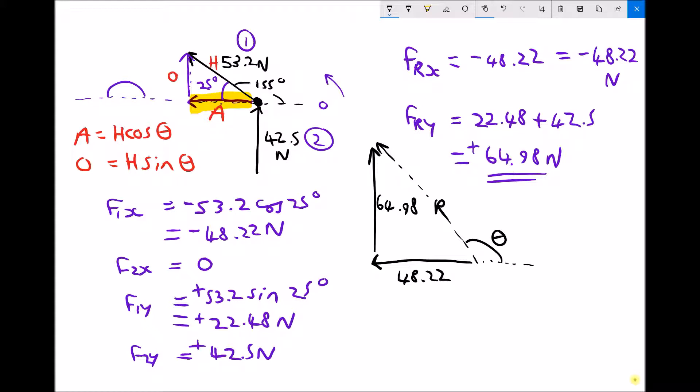Now the way that we'll need to do this is we'll need to find the angle inside the triangle, phi, and then we can determine theta from there. So first of all, we need to find the magnitude of the resultant. And remember, it's the square root of the 48.22 squared plus the 64.98 squared. The square of the two shorter sides gives the square of the longer side. 64.98 squared plus 48.22 squared. And again, remember to square root that. The magnitude of the resultant is 80.92 newtons.